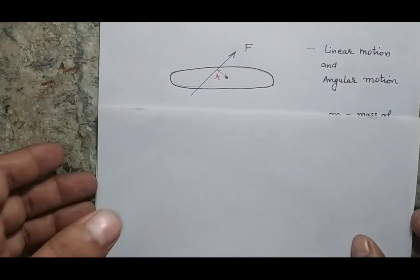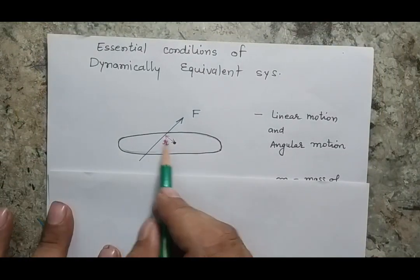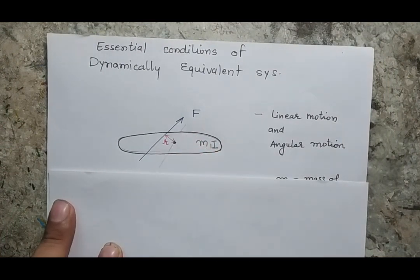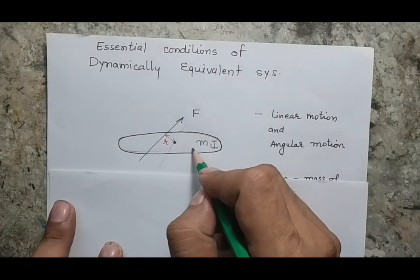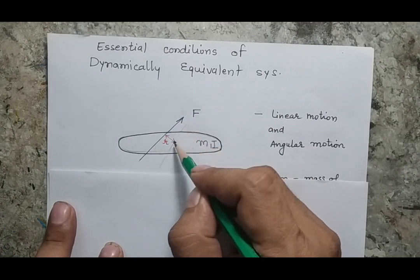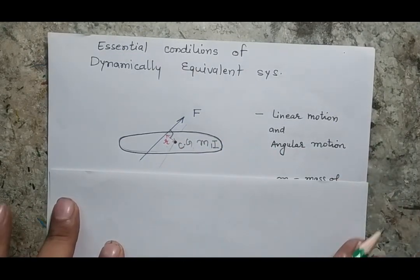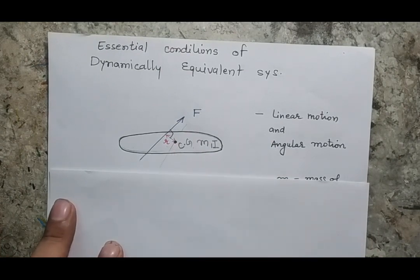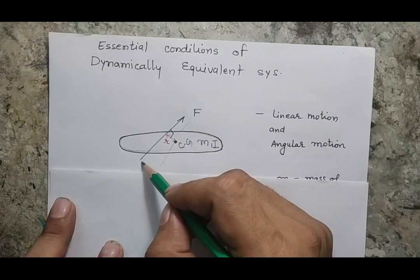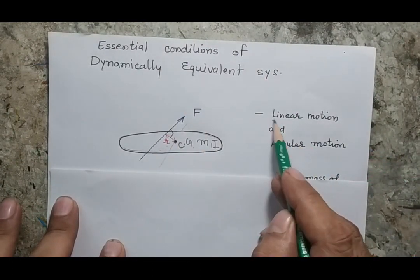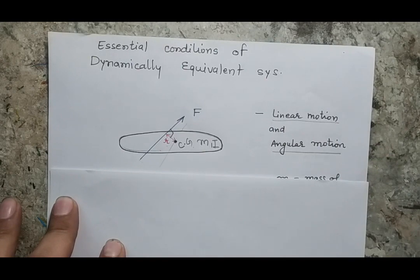Let us consider a case where I have a body of mass M and moment of inertia I about an axis perpendicular to the plane. I am applying a force F on the body, and the line of action of the force has a perpendicular distance R from the centroid of the body. I know the mass and moment of inertia of this body. When I apply this force, the body will move in space — there will be both linear motion and rotational or angular motion.